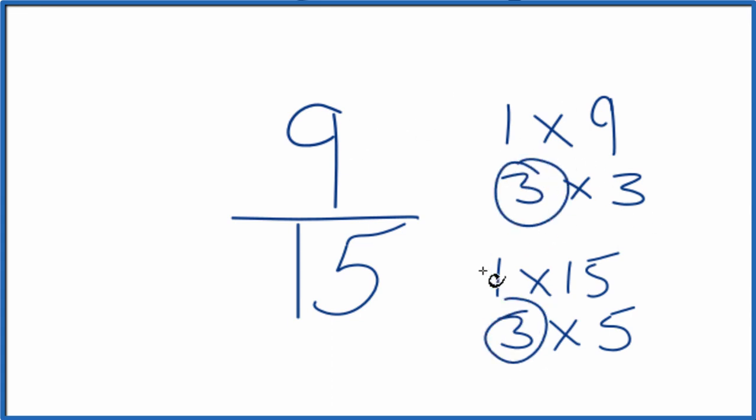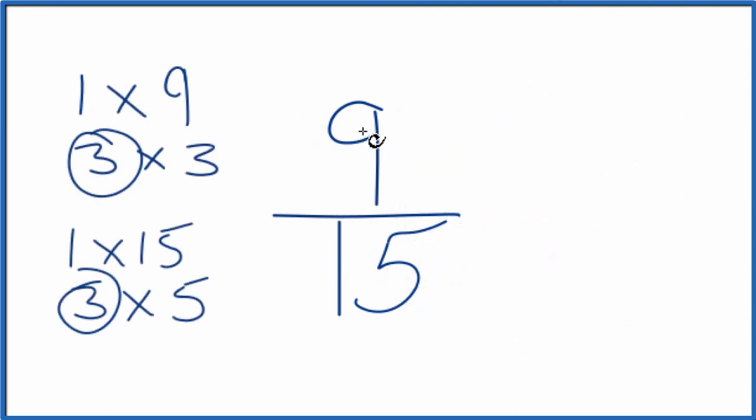So we divide 9 by 3, 15 by 3, and we'll simplify 9 over 15. Let's move these over here. 9 divided by 3, that gives us 3, and then 15 divided by 3, that gives us 5, and we've simplified 9 fifteenths down to three-fifths.